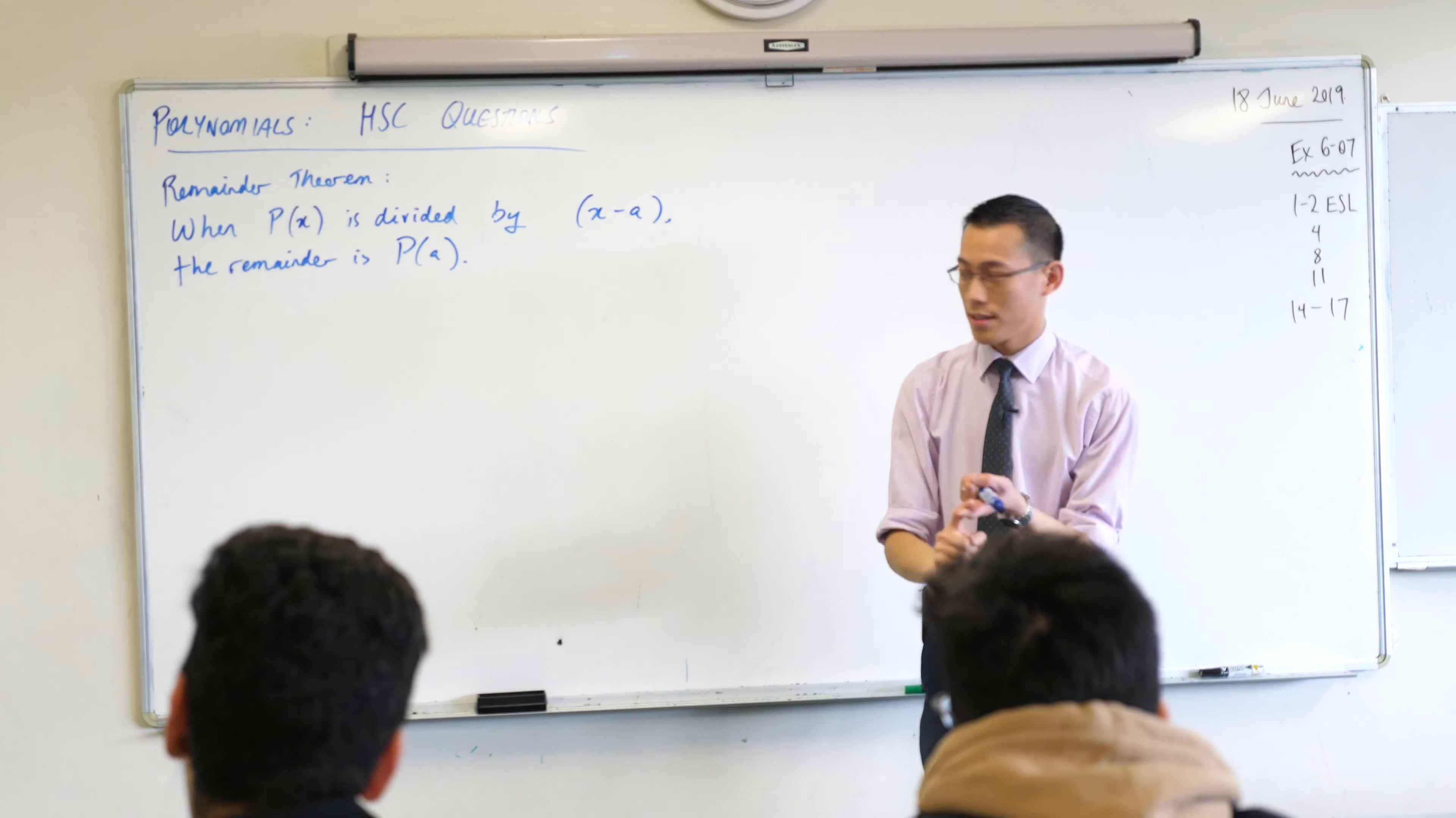When you see the polynomial written in this form, this actually has a name - we called this the division transformation. It says if you divide some polynomial by something, you'll get a quotient, and then this thing here is the remainder.